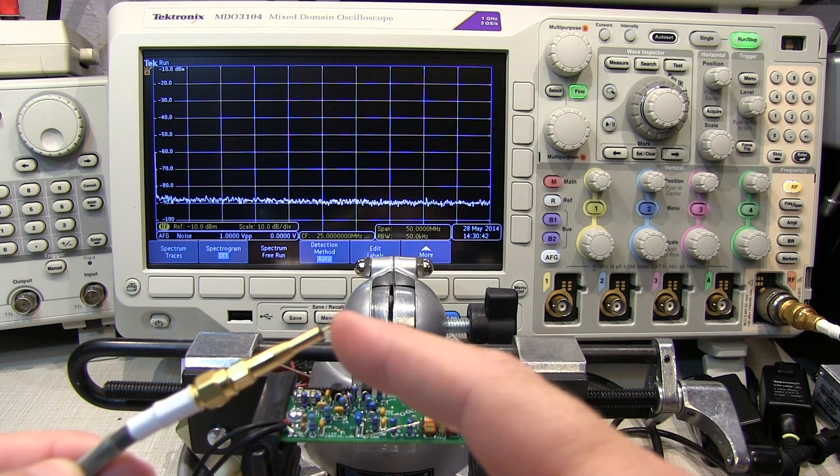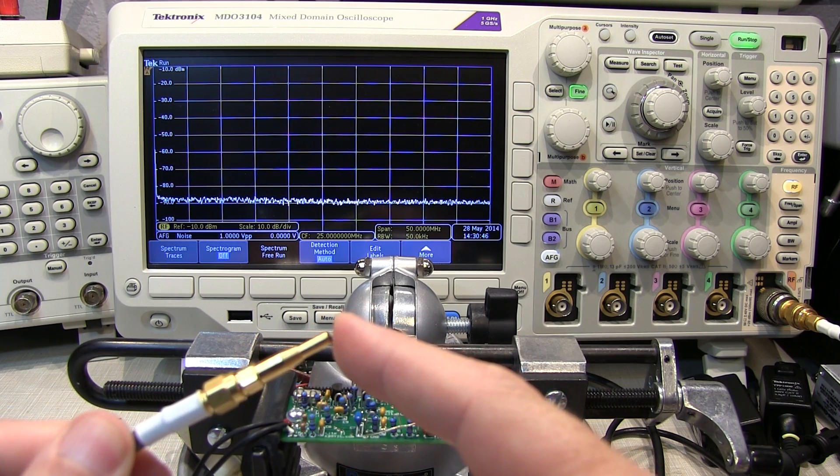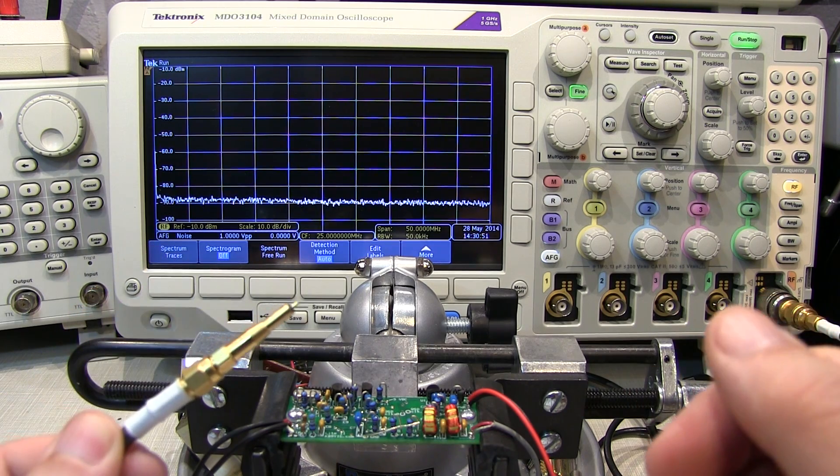One that's a 10x tip that will provide a 500 ohm input impedance, and this is the 1x tip that provides a 50 ohm input impedance. This filter was designed to be loaded with 50 ohms, so that's the appropriate tip to use.